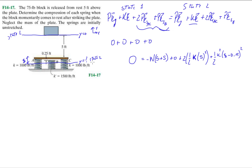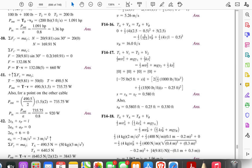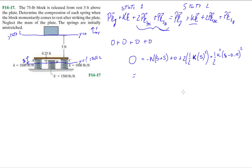Remember that spring B's compression is s minus 0.25 because it starts at a lower height. When you work through this you should get the same answer the book gets. That's the way they approached it, and it makes sense — but not everyone is going to see the quickest, most efficient way of doing this.